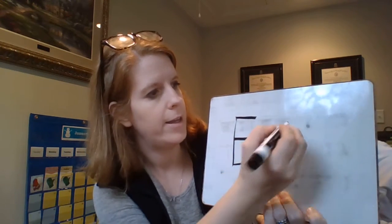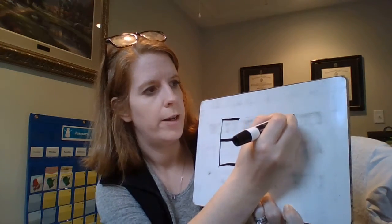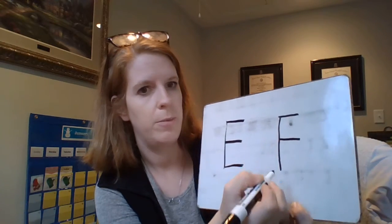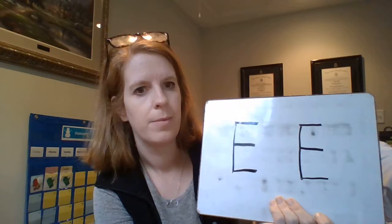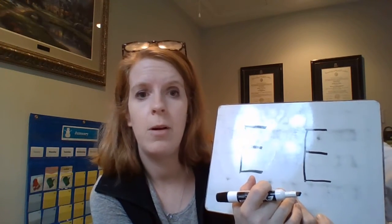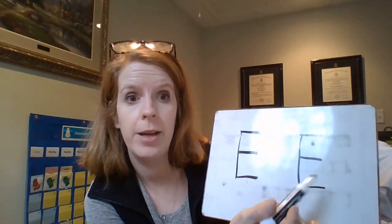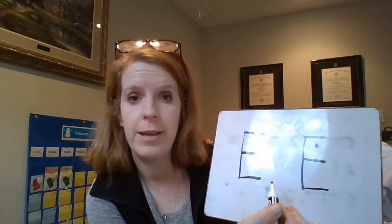So let's try that again. Draw a straight line down, straight line across the top, straight line across the middle, and a straight line across the bottom. E. And we write uppercase when we see someone's name or an important place. So like we have Miss Erica and Esmeralda. When we see their names they would start with an uppercase E.